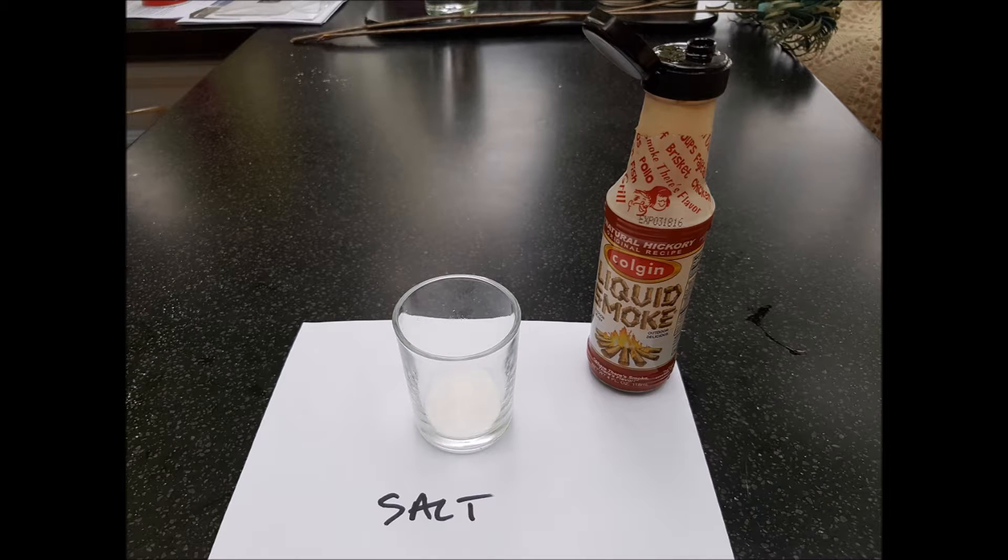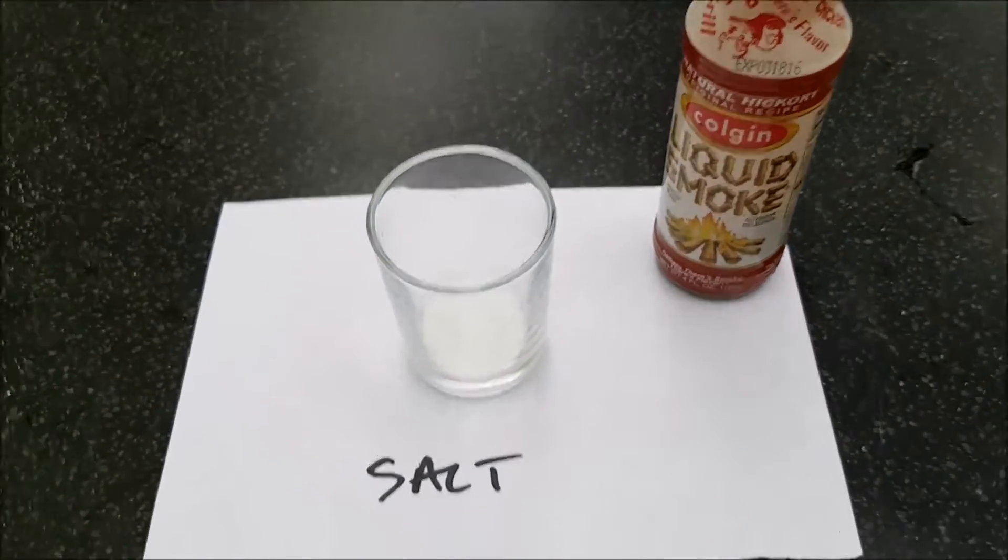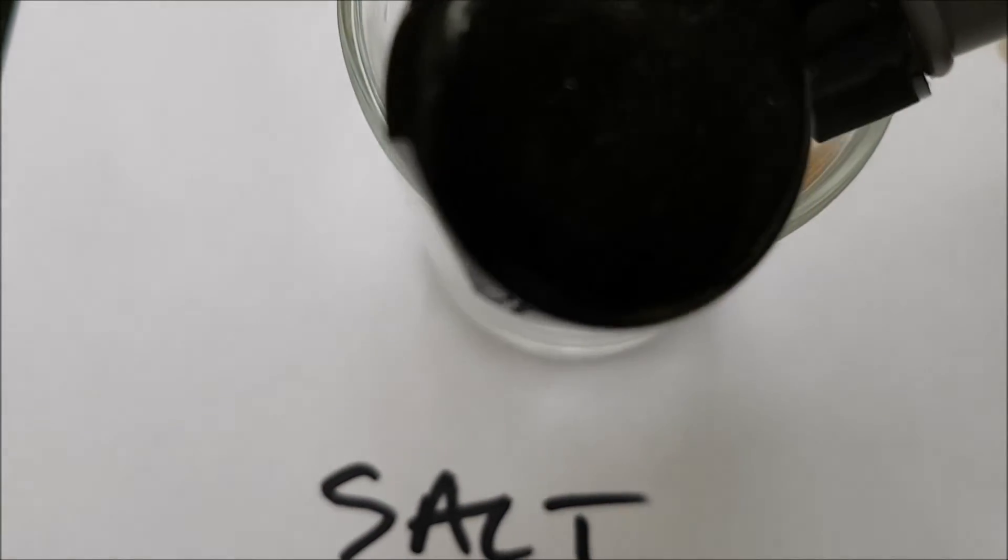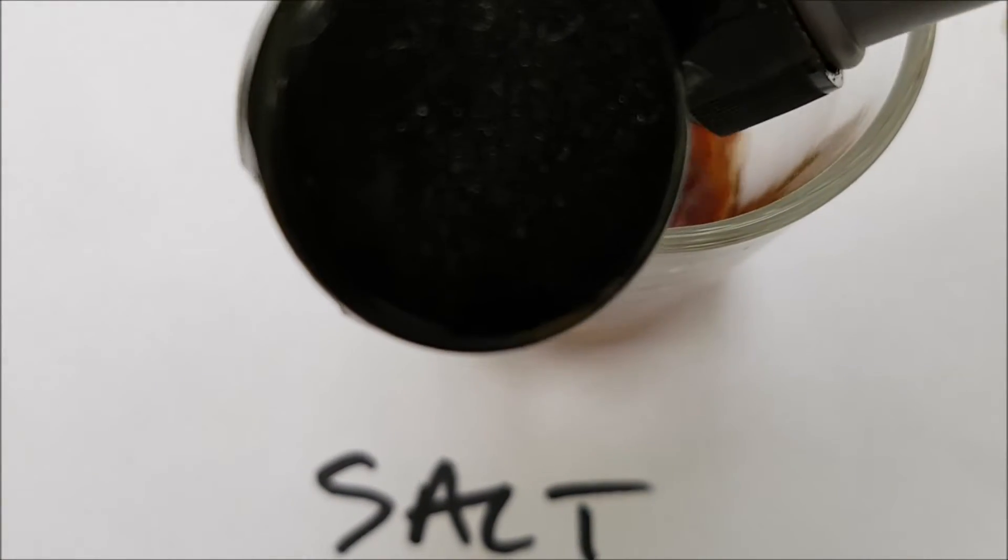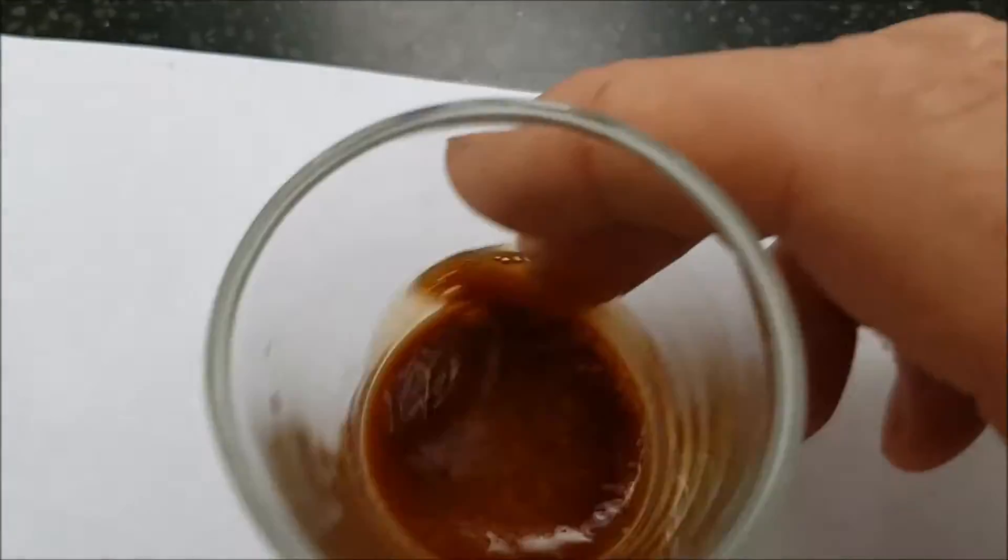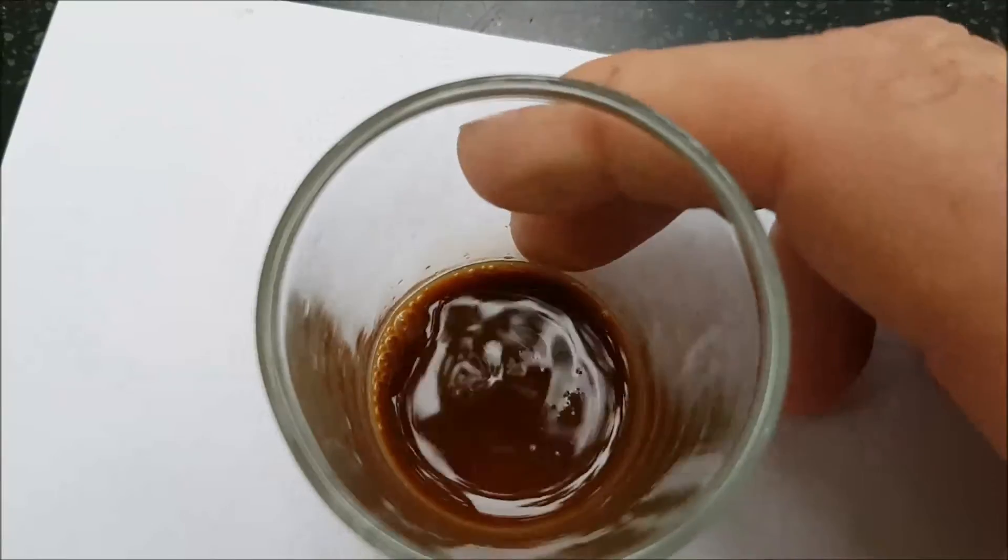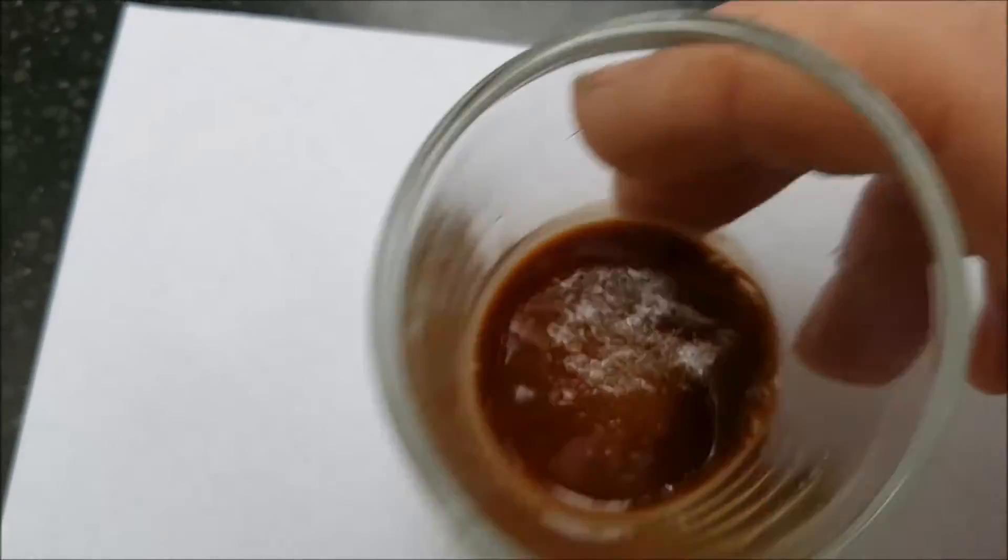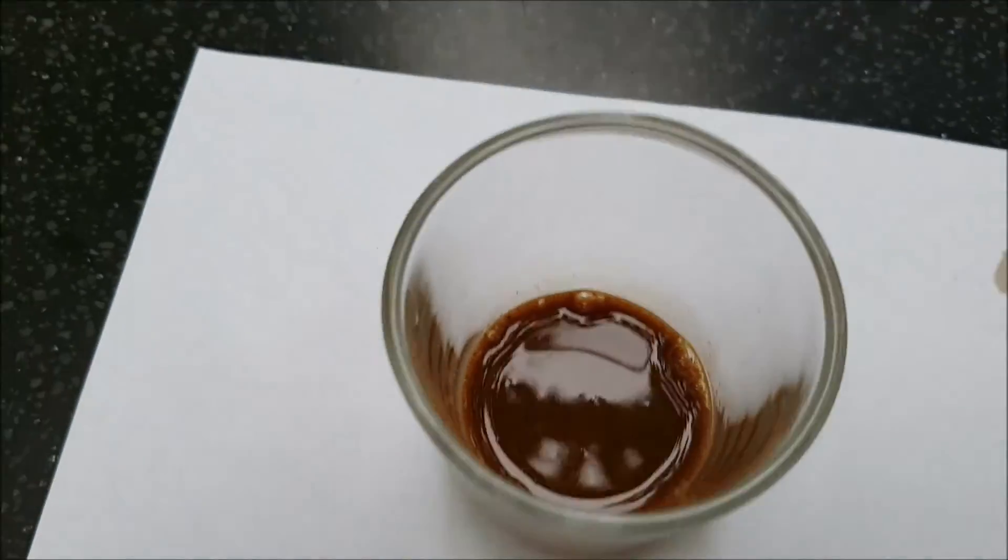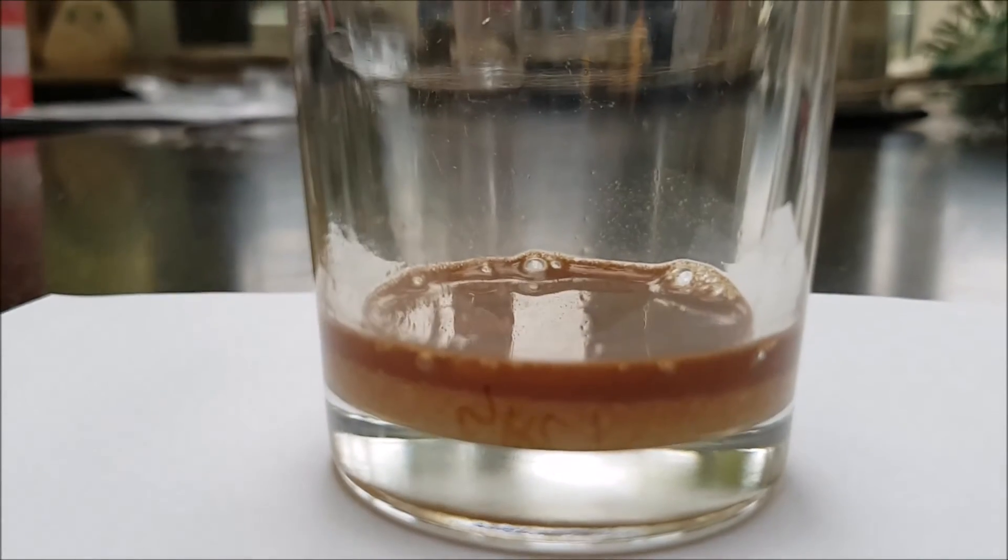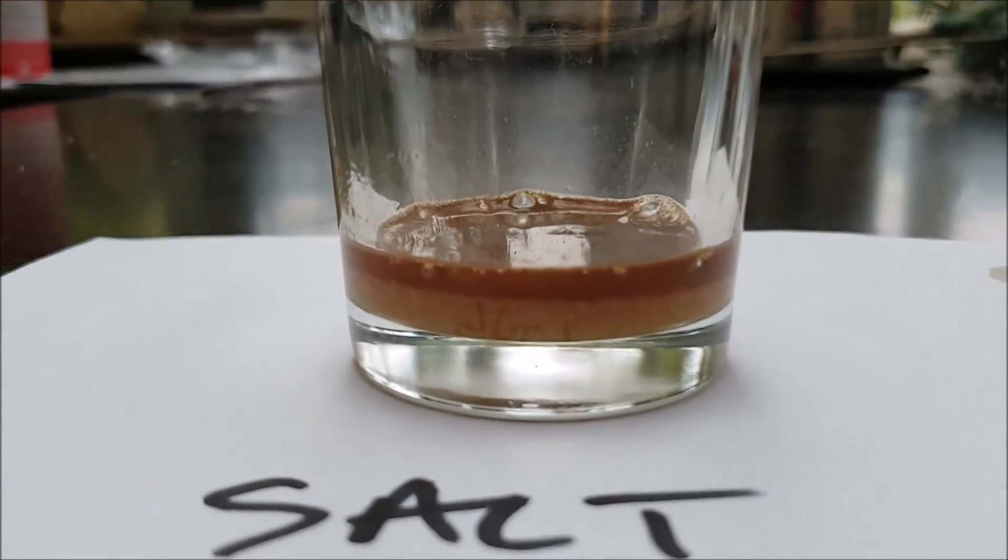Here we try the liquid smoke just in the salt to see whether we get the same frothing as we got with the cures. And this would indicate whether the cures were actually causing a reaction. The liquid smoke directly onto the plain table salt. We don't get the frothing in the same way as we did with adding the liquid smoke to the cures.